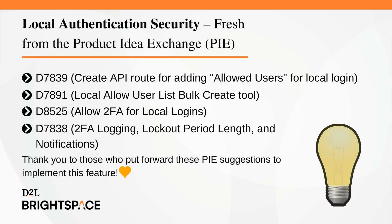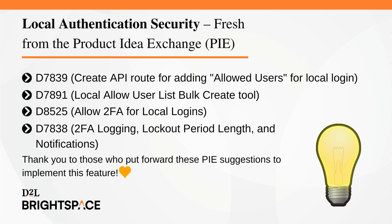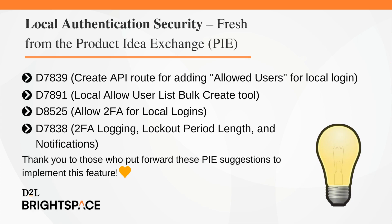The local authentication security feature implements the following PI items: D7839, create API route for adding allowed users for local login; D7891, local allow user list bulk create tool; D8525, allow two-factor authentication for local logins; and D7838, two-factor authentication logging, block out period length, and notifications. Thank you to all those who put forward these PI suggestions to implement this feature.